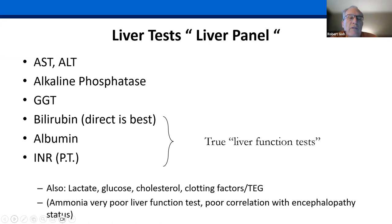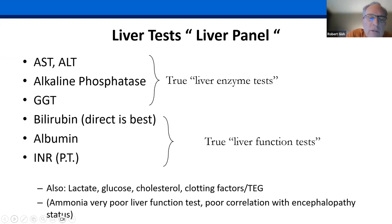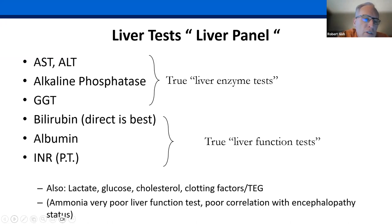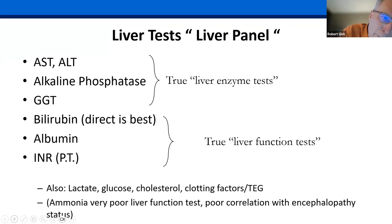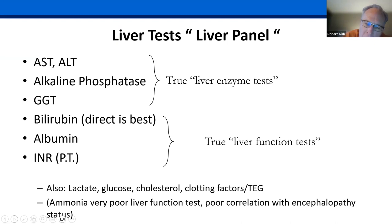Everybody knows the liver enzyme and liver function dialogue. I want to make sure all the new fellows are aware that AST, ALT, alkaline phosphatase, and GGT are not liver function tests — they're liver enzymes. For the rest of your career, stick with this new terminology. Bilirubin, albumin, and INR are your best liver function tests, specifically direct bilirubin. Lactate is a good liver function test. Low glucose, low cholesterol, abnormal clotting factors, and we'll talk about TEG later replacing INR.